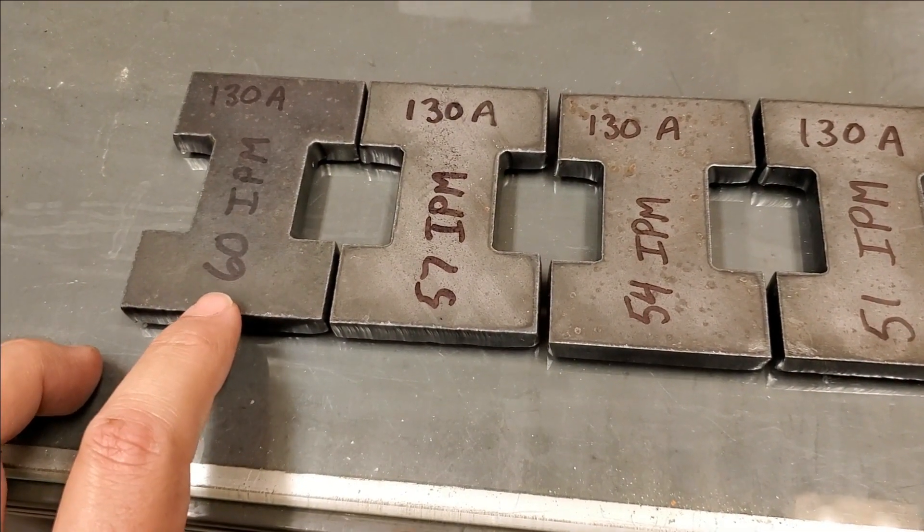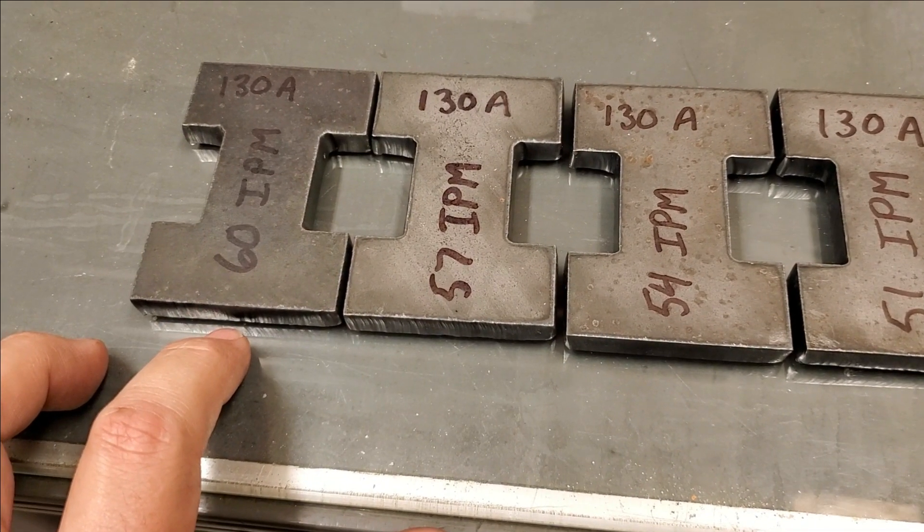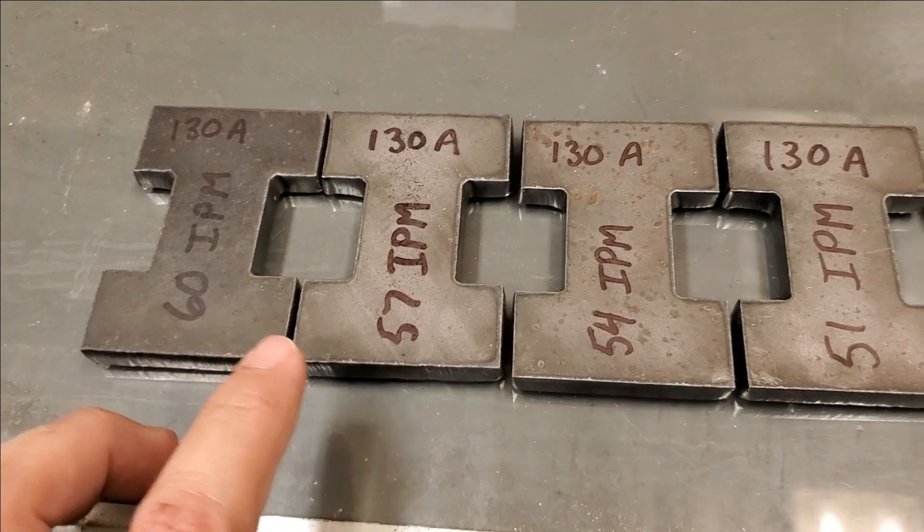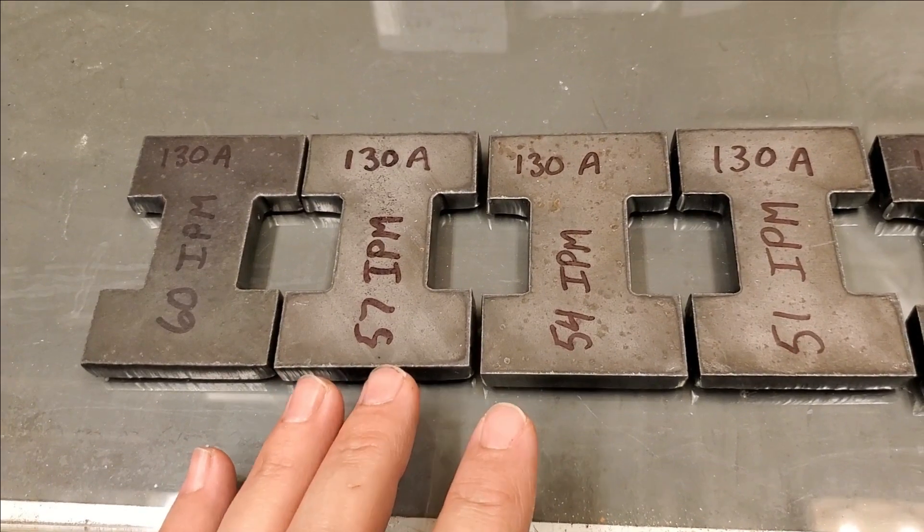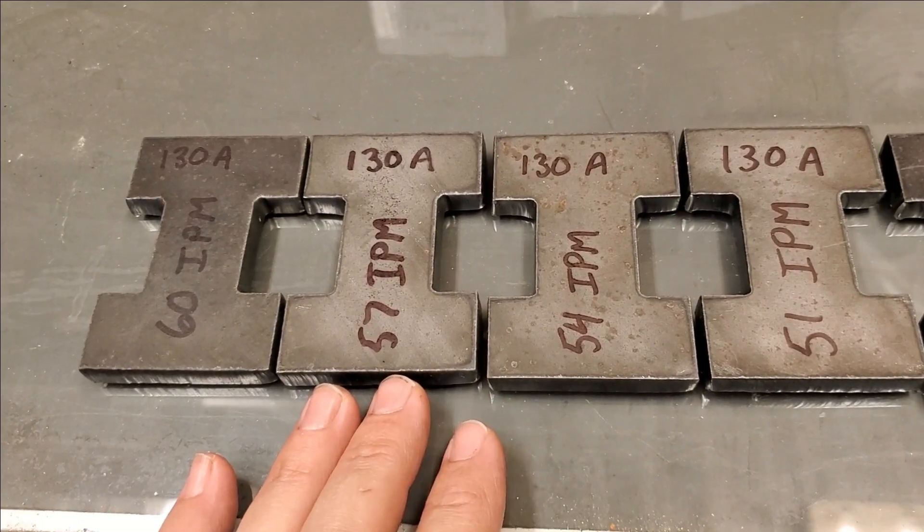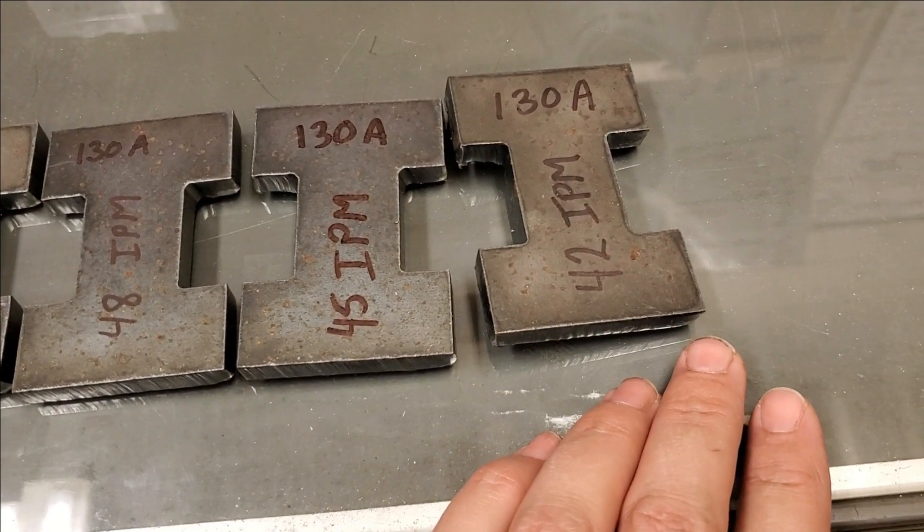This is effectively 100% of the feed for this particular size of plate, so 60 inches per minute. And then I dropped it down by 5% each time, so this is 57 inches a minute or 95% of that, and I went all the way down to 70%.